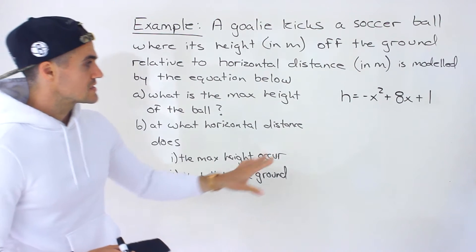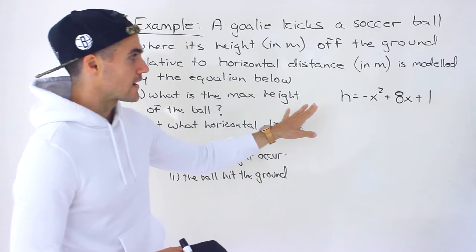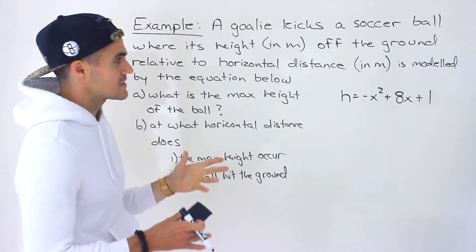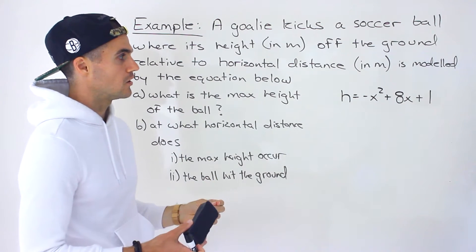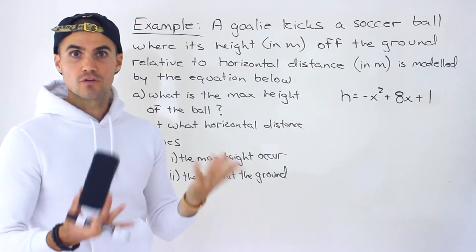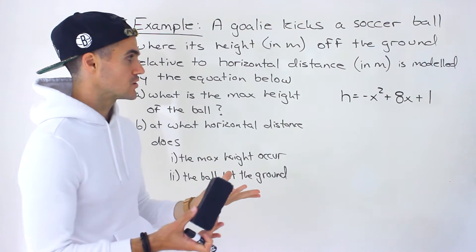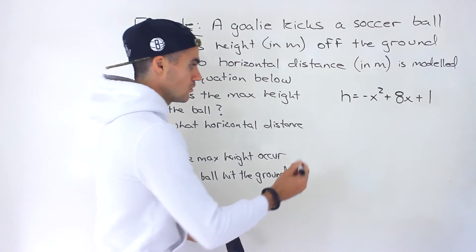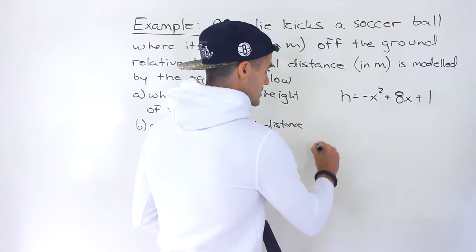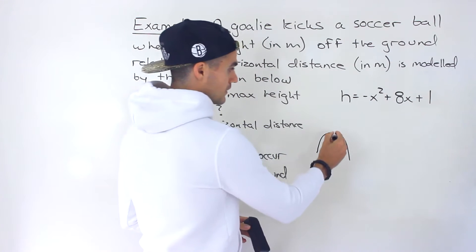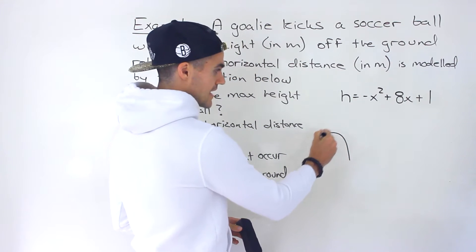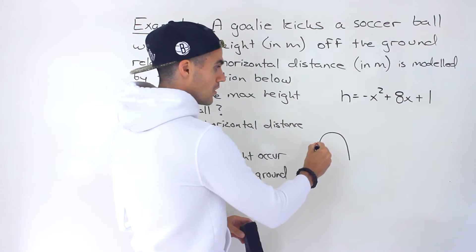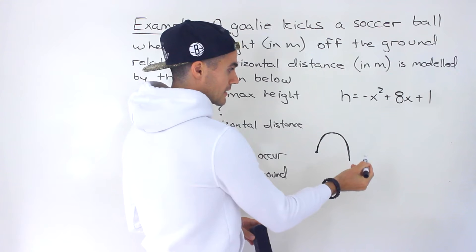Notice that this equation is a quadratic given in standard form. In part A, they're asking for the max height of the ball, so they're asking for the vertex. It's going to be a maximum because the a value is negative, so this quadratic opens downward. That makes sense in terms of the word problem, because when a goalie kicks a soccer ball, it's going to go up and then come back down.